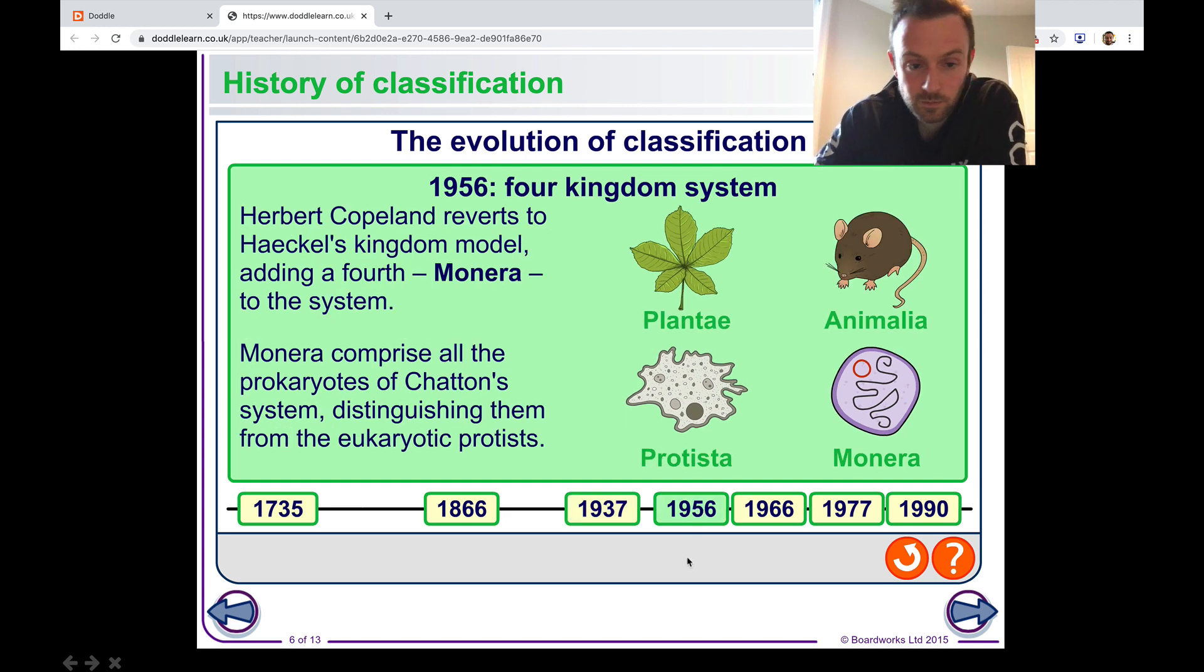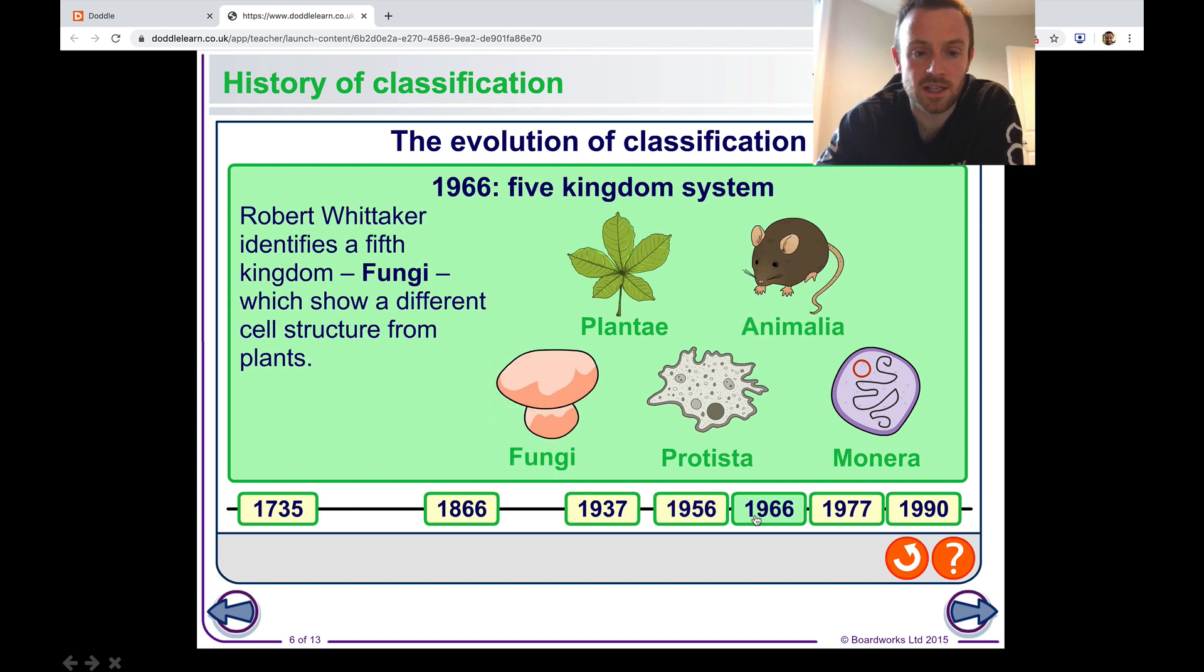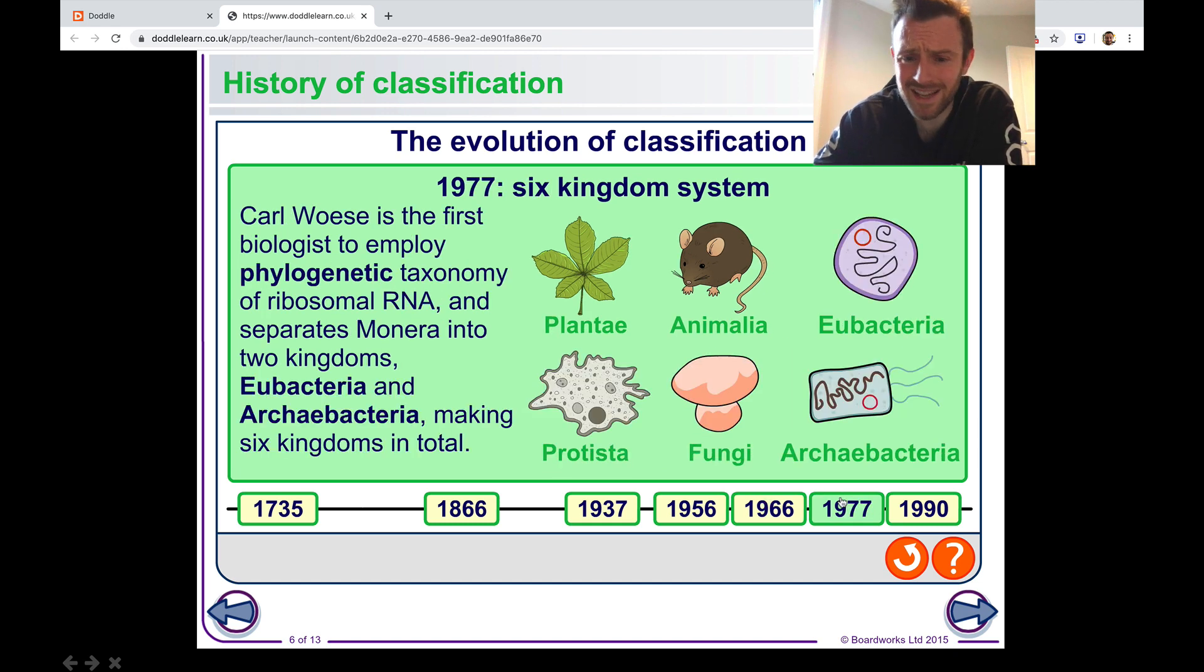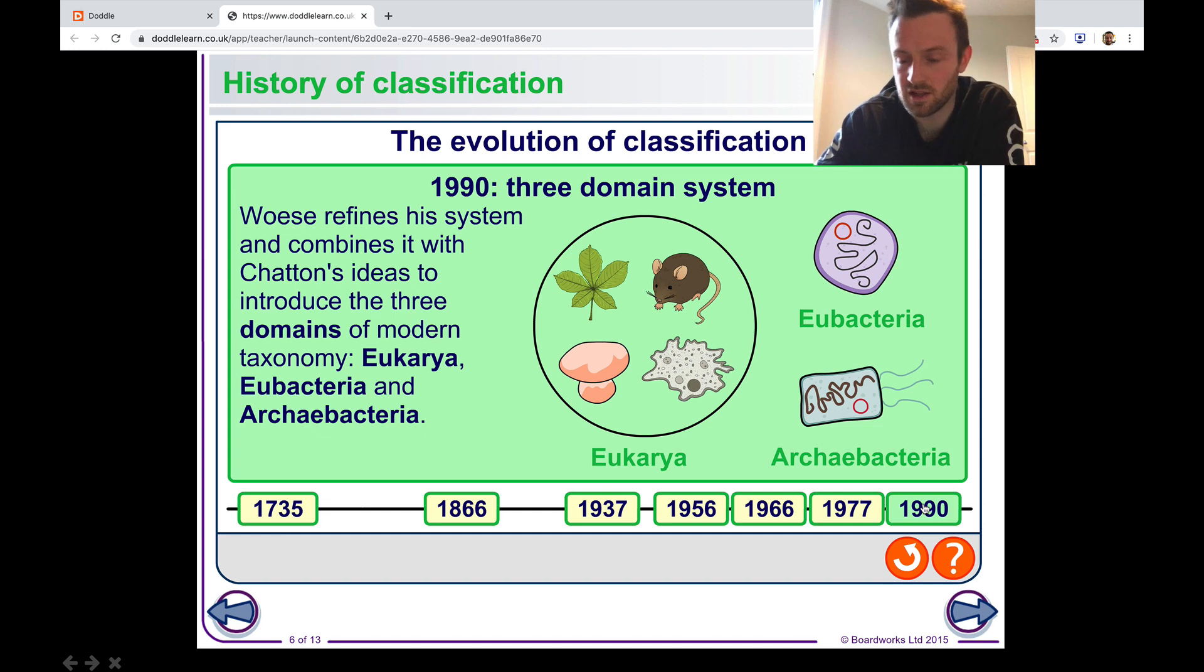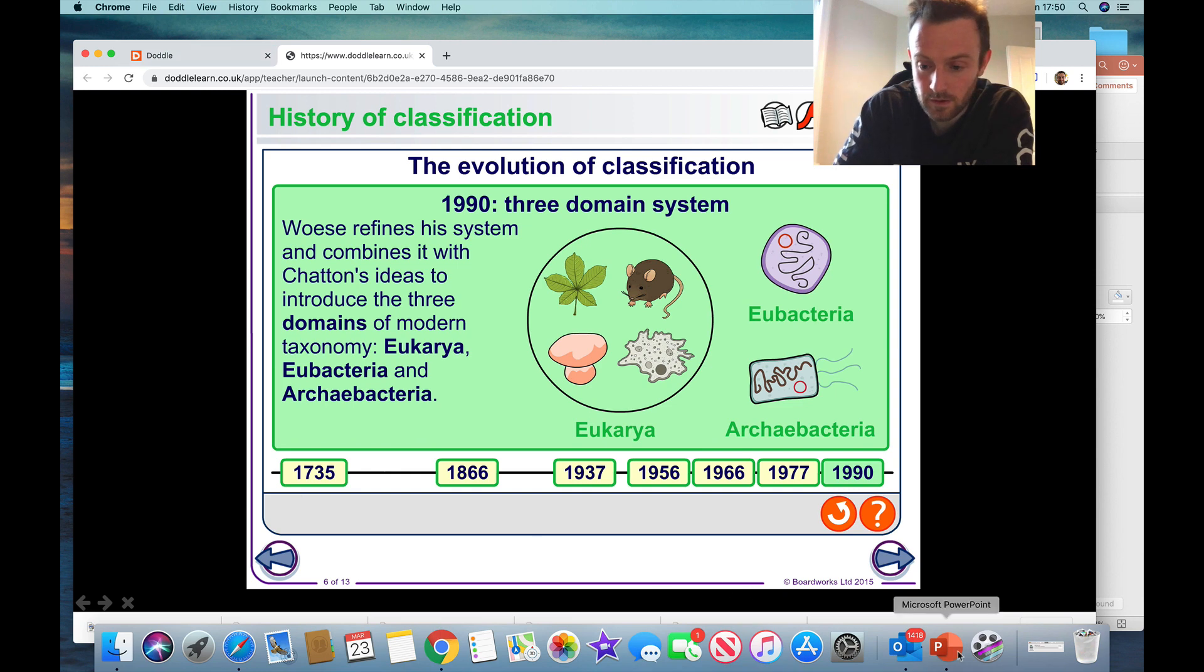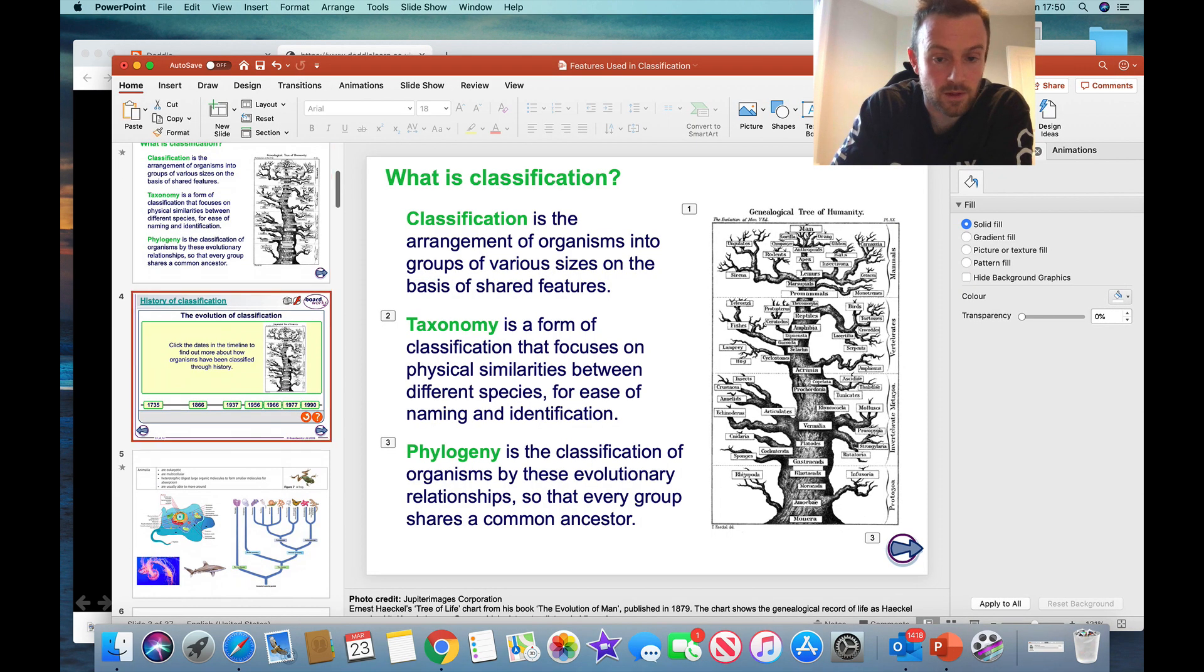1956, so relatively recent, we sort of went back a little bit to the four kingdom system. This kind of continued to develop. Fungi in 1966 were put in their own group to show that they were different from plants. They don't have chlorophyll, they don't make their own food. 1977, six kingdoms with the discovery of this archaebacteria which is really a very different type bacteria from eubacteria. And now we're at this three domain system. So we have the eukaryotes and then we have the eubacteria and the archaebacteria which is what we just looked at. So let's go back to that slideshow now that we've reviewed the history of classification.